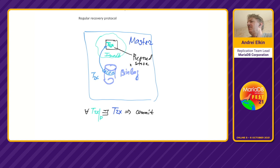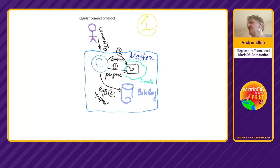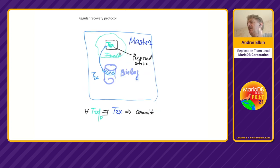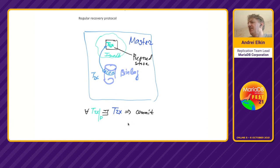That protocol helps recovery in the following way. Say a master crashed somewhere between phases 2 and 3. The transaction would be sitting in binlog and in a prepared state in InnoDB. In that case, the logic of recovery is very straightforward for any transaction of this type — depicted in light green. If it has a representation in binlog, then the rule is to commit. Otherwise, the transaction gets rolled back.